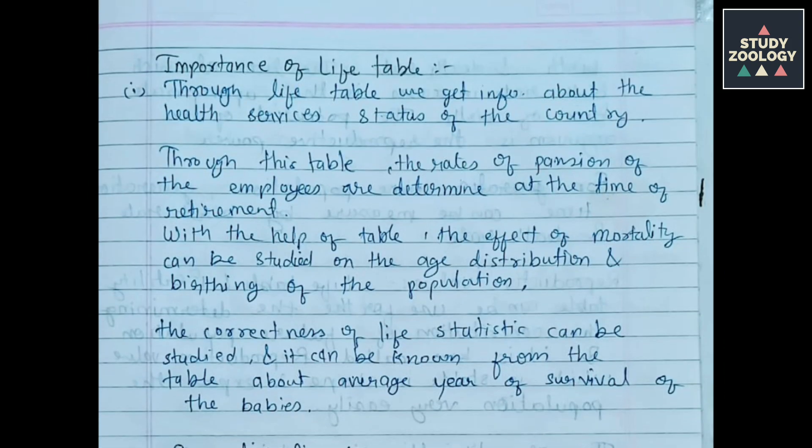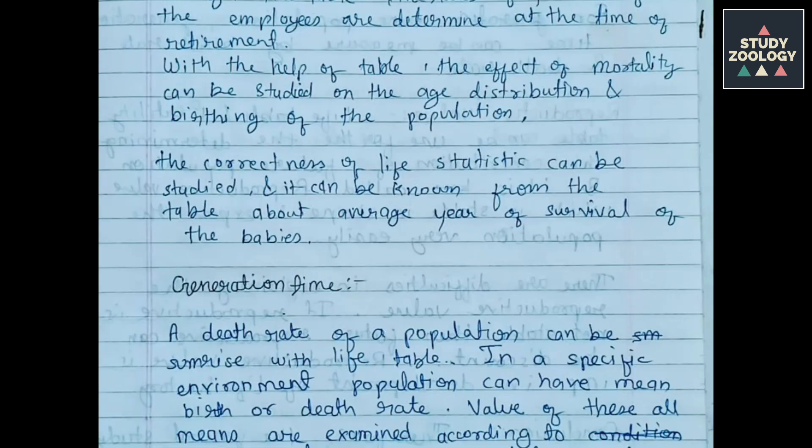Importance of Life Table: Through a Life Table, we can get information about the health services status of the country. Through this table, the rate of pension of employees is determined at the time of retirement. With the help of the table, the effect of mortality can be studied on the age distribution and birthing of the population. The correctness of life statistics can be studied and it can be known from the table about the average years of survival of babies.